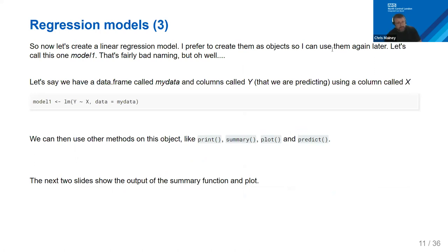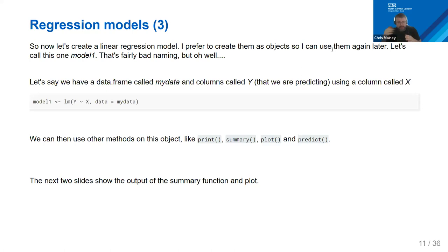In the Generalized Linear Model we apply linear modeling concepts to things that aren't linear in the Y term — like binary outcomes such as 'did a patient die?' (a zero/one). We have to use maximum likelihood, which iteratively estimates the relationship, tries again, checks whether the result is more likely, and iterates until it can't improve further.